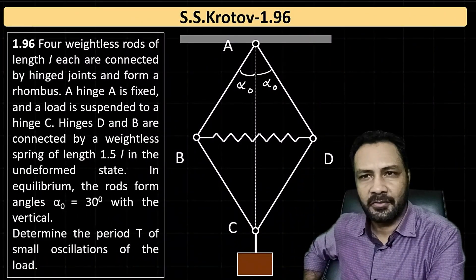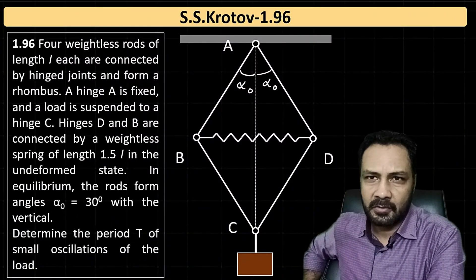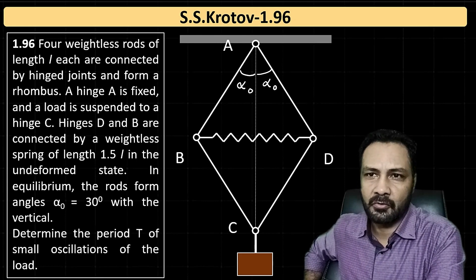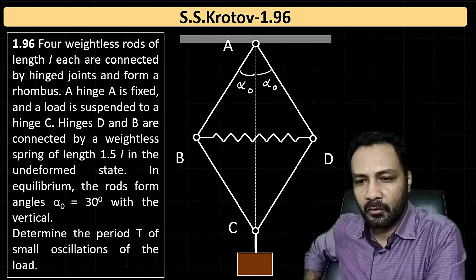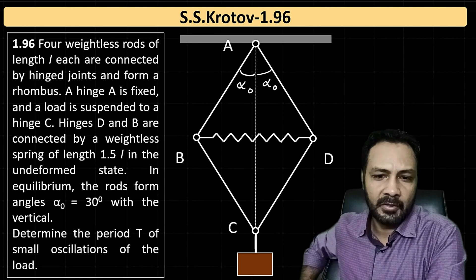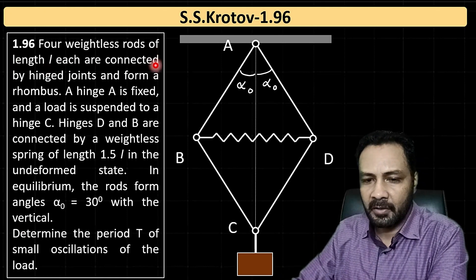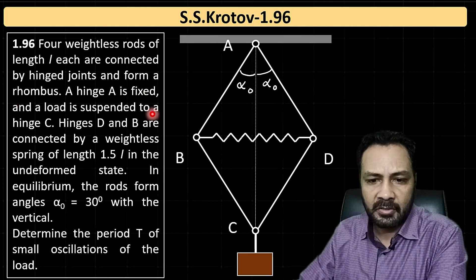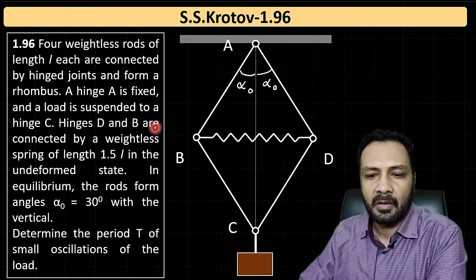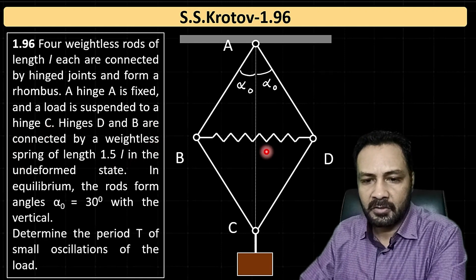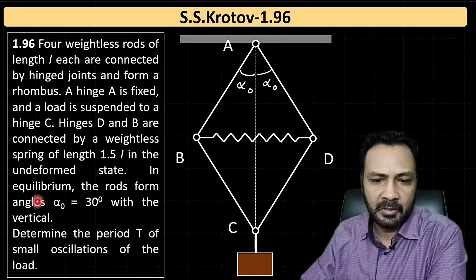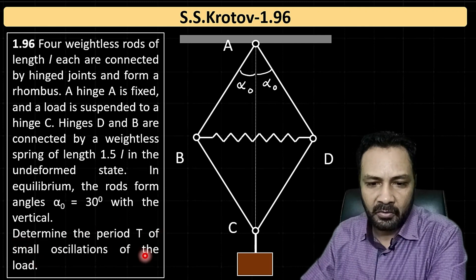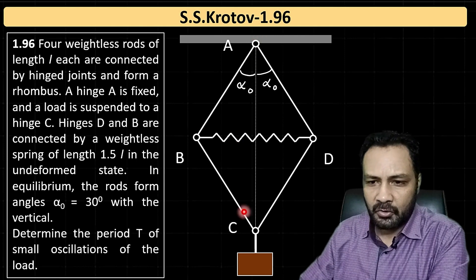Hello everyone. Let's solve this oscillation question from Irodov problem 1.96, requested by one of my subscribers. The question involves four weightless rods of length L each, connected by hinges forming a rhombus. Hinge A is fixed and a load is suspended from hinge C. Hinges B and D are connected by a weightless spring of natural length 1.5L. In equilibrium the rods form angles of 30 degrees with the vertical. We need to find the time period T of small oscillations of the load.